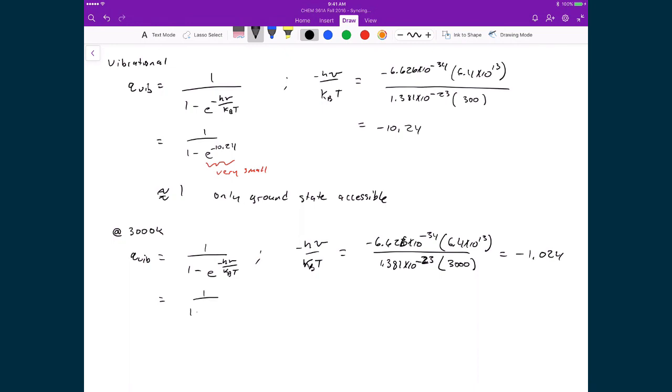And so if I were to substitute that in now, 1 minus e to the negative 1.024, well, this exponential is now a number that's comparable to 1, which means that my qvib now is going to be equal to 1.56. And so what this says now is that more than the ground state is actually accessible. But you can see that this number is still very, very small compared to the rotational and the translational. And so you can see how little of an effect the vibrational modes have on the partition function, being how few vibrational states are accessible even at these highly elevated temperatures. Where at 3,000 Kelvin, we would expect that the CO molecule to probably have decomposed before it actually has any significant contributions from vibrational excitations.